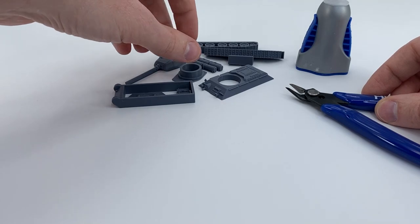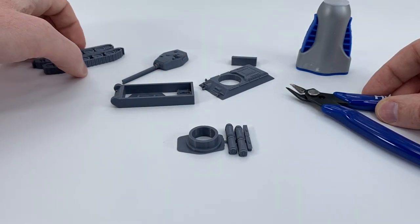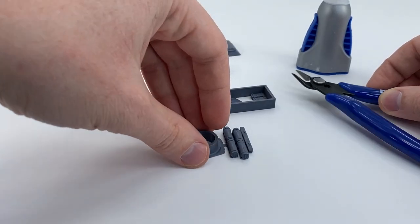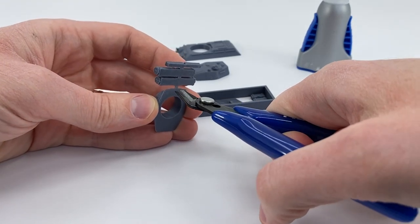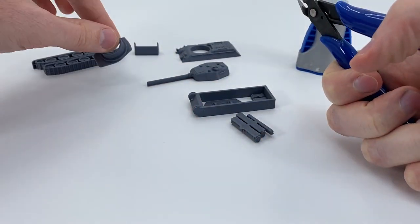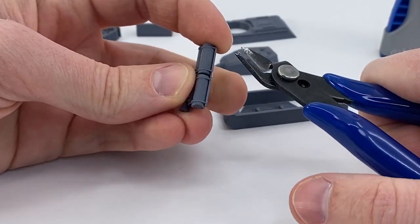So let's go ahead and start cutting away the sprues. Those two pieces are good. This piece is fine and this piece is fine as well. Now go ahead and take your cutters like that. So that should be good and then cut like this.